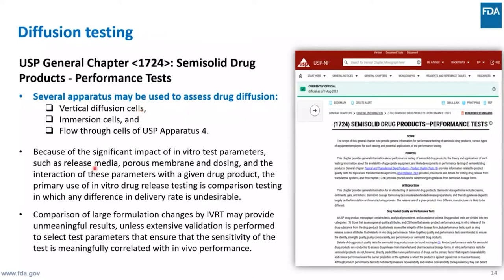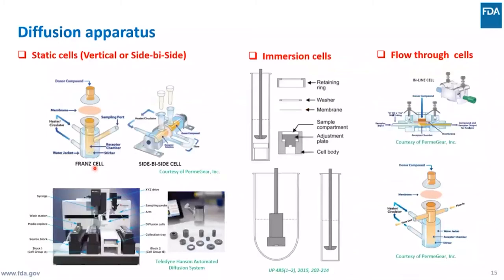Several apparatus are mentioned in the chapter, including vertical diffusion cells, immersion cells, and the special flow-through cell used in USP Apparatus 4. Because of the significant impact of in vitro test parameters, the primary use of in vitro testing is mainly for comparison testing, where any difference in release rate is undesirable — such as bioequivalence testing of test versus reference drug products, lot-to-lot variability, and product changes at different levels. Comparison of large formulation changes by IVRT may provide unmeaningful results unless extensive validation is performed.